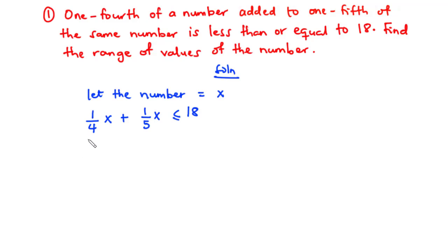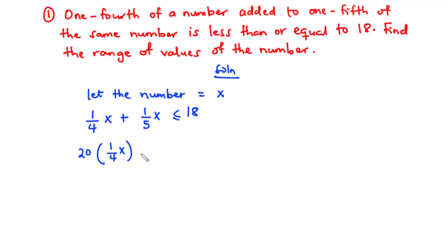We have two fractions: one over four times x and one over five times x. To eliminate the fractions, we multiply each term of the linear inequality by the LCM of 4 and 5, which is 20. So we multiply each term by 20: 20 times (1/4)x plus 20 times (1/5)x is less than or equal to 18 times 20.